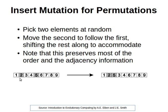Assuming the first random index is one and the second random index is four, what we do is we shift that five to become next to the two — so right after two — and then we just push these elements to the right as you can see here.